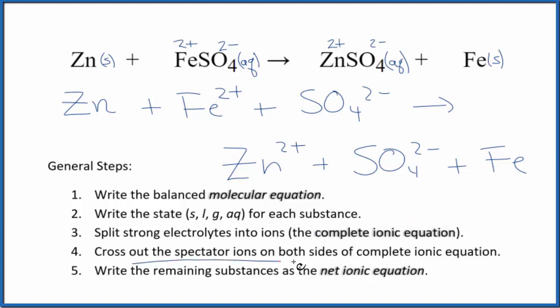Now we can cross out the spectator ions. They're on both sides of the complete ionic equation. So as we look here, Zn and Zn2 plus, those are different. Can't cross those out. Same with the Fe2 plus and the Fe. But the sulfate ion here in the reactants, and again in the products, that's a spectator ion. That's gone.